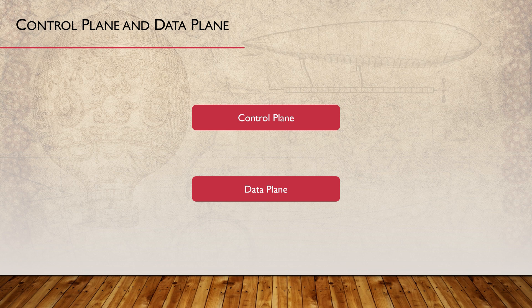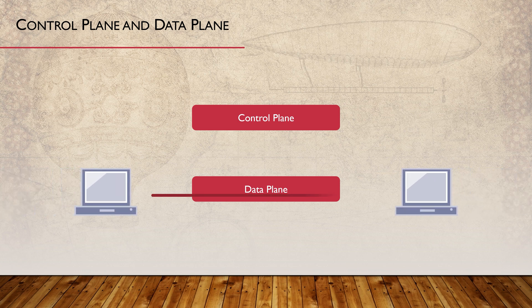This is not unique to Juniper. Control and data planes are concepts that apply to all modern network devices. When a switch or router is forwarding traffic, it passes through the data plane, also known as the forwarding plane. A plane is a logical concept which explains how traffic is handled.